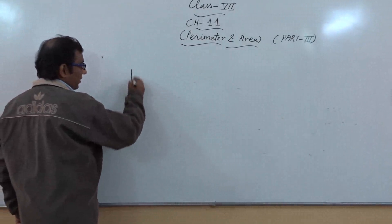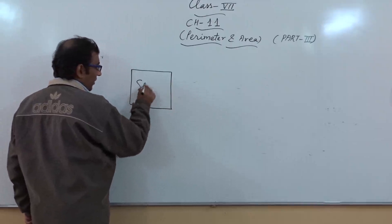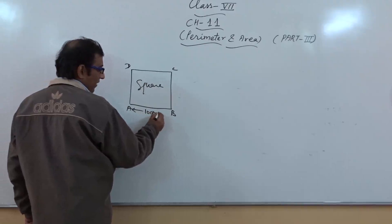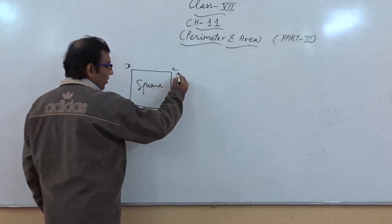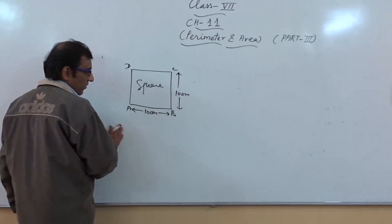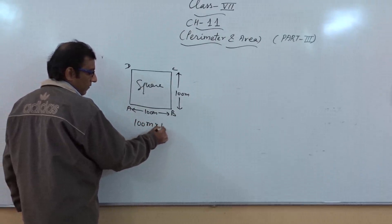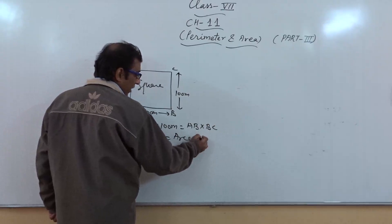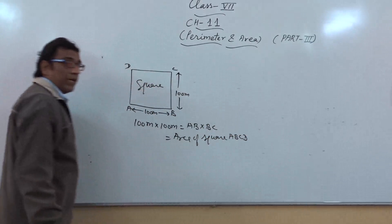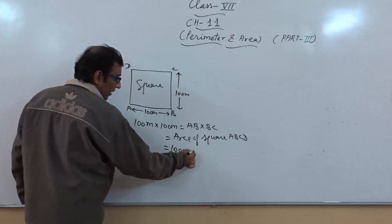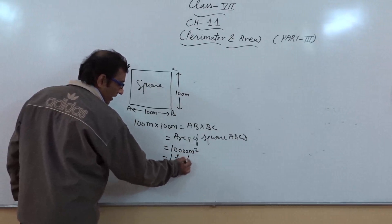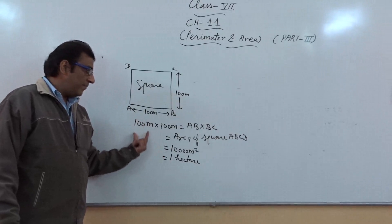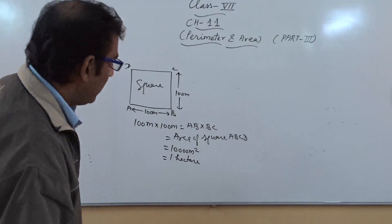Before starting some applications, please pay attention to this shape. Basically this is a square ABCD, and if we say the side is 100 metres, then AB is 100 metres and all sides are equal to 100 metres. So 100 metres multiplied by 100 metres — that is AB multiplied by BC — is the area of a square, which becomes 10,000 metre square. And the value of 10,000 metre square is equal to 1 hectare.